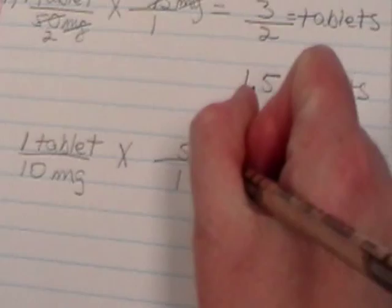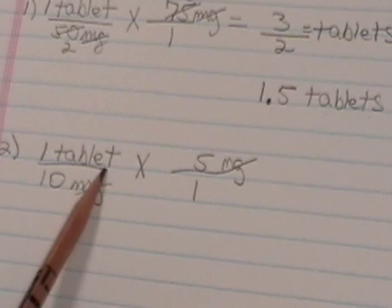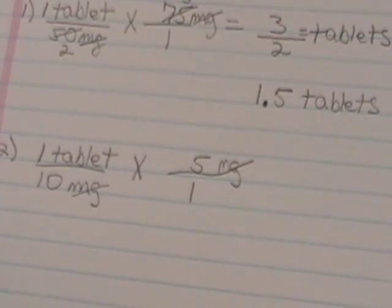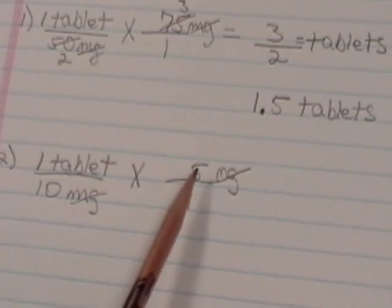So again, we are going to cancel out like terms. Our milligrams will cancel out. And then we are left with tablets. So we know that our answer will be in tablets. Also notice again that these will reduce down.